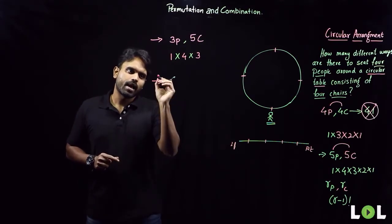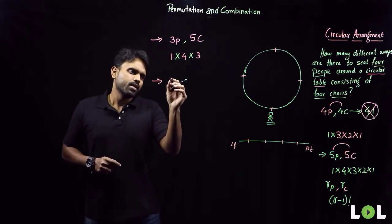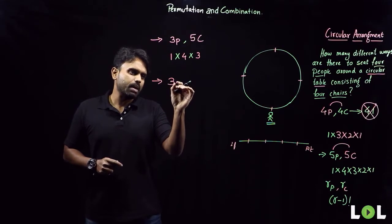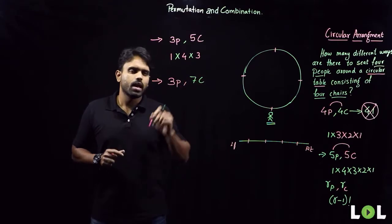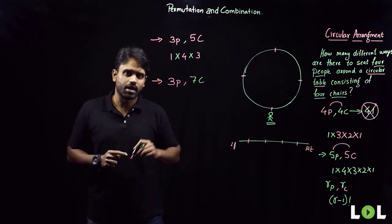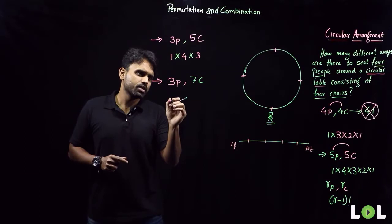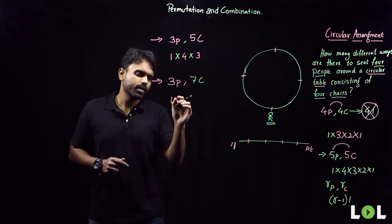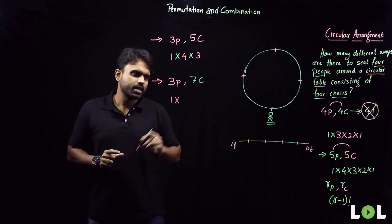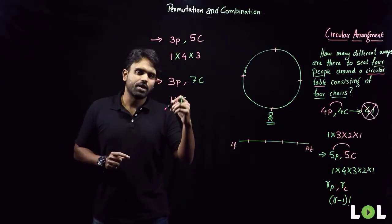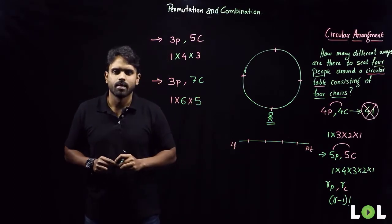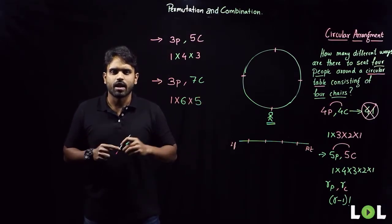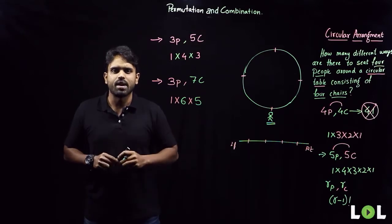Another question: there are three people and seven chairs — in how many different ways can they sit in a circular arrangement? The first person walks in and can sit in one different way. The second person can sit in six different ways. The third person can sit in five different ways. There are many other questions in circular arrangement with multiple conditions, which we'll take up in advanced courses.